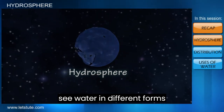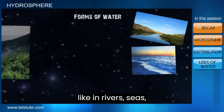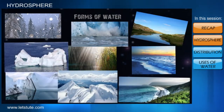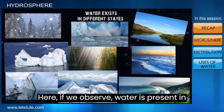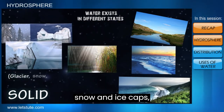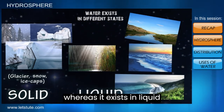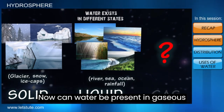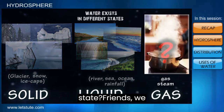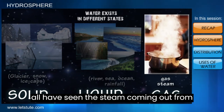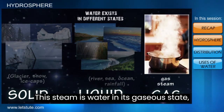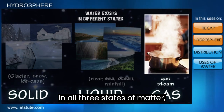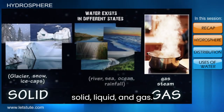We can see water in different forms, like in rivers, seas, oceans, snow, rain, glaciers, and ice caps. Water is present in solid form in glaciers, snow, and ice caps, whereas it exists in liquid form in rivers, seas, oceans, and rainfall. Water can also be present in gaseous state — we have all seen steam coming out from boiling water. So water exists in all three states of matter: solid, liquid, and gas.